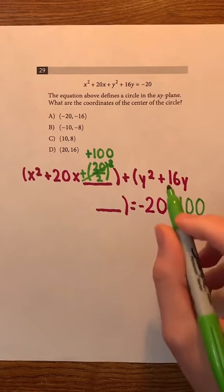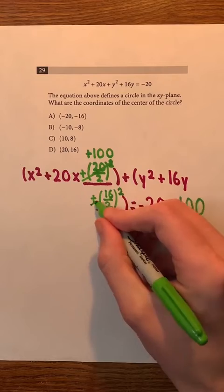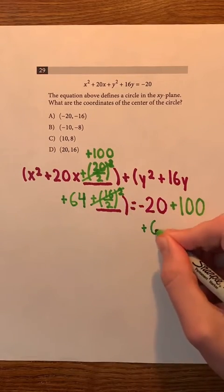We're gonna do the same exact thing for 16. 16 divided by 2 is 8, and 8 squared is 64. And of course, we'll also add it to the other side of the equation.